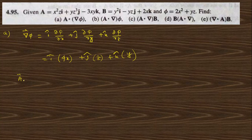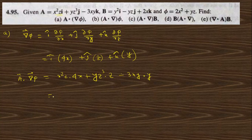Now we need to find a·grad φ. So a·grad φ means: the i-cap component of a is 1, giving x²z·(4x) plus yz³·(z) plus (−3xy)·(y). This is nothing but 4x³z + yz⁴ − 3xy². This is the answer to question part a.